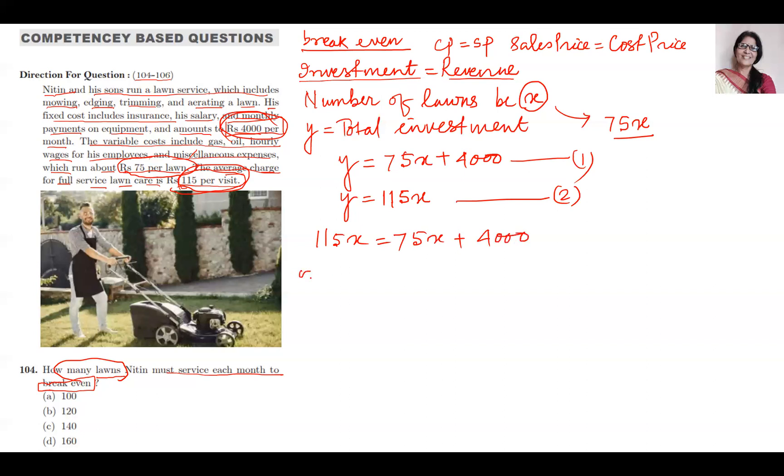Taking x to one side, you will get 115x minus 75x equals 4,000. 40x equals 4,000. x equals 4,000 divided by 40. The number of lawns will be 100. A is the correct answer.